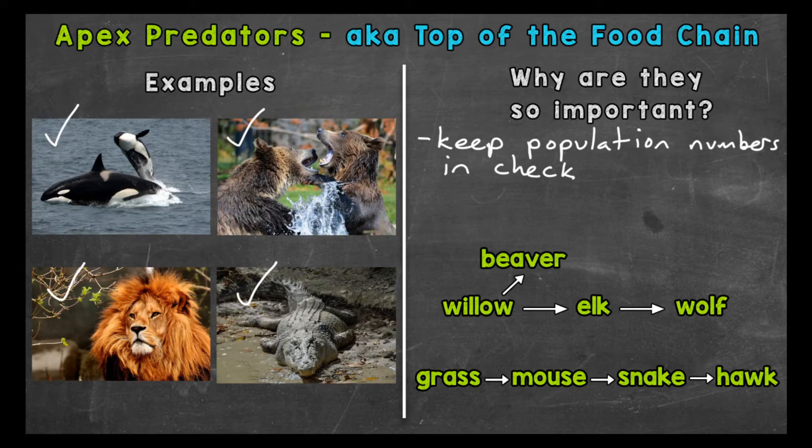Another example are coral reefs. Sharks are an indication of a healthy reef — everything is in check and populations are healthy and sustainable.